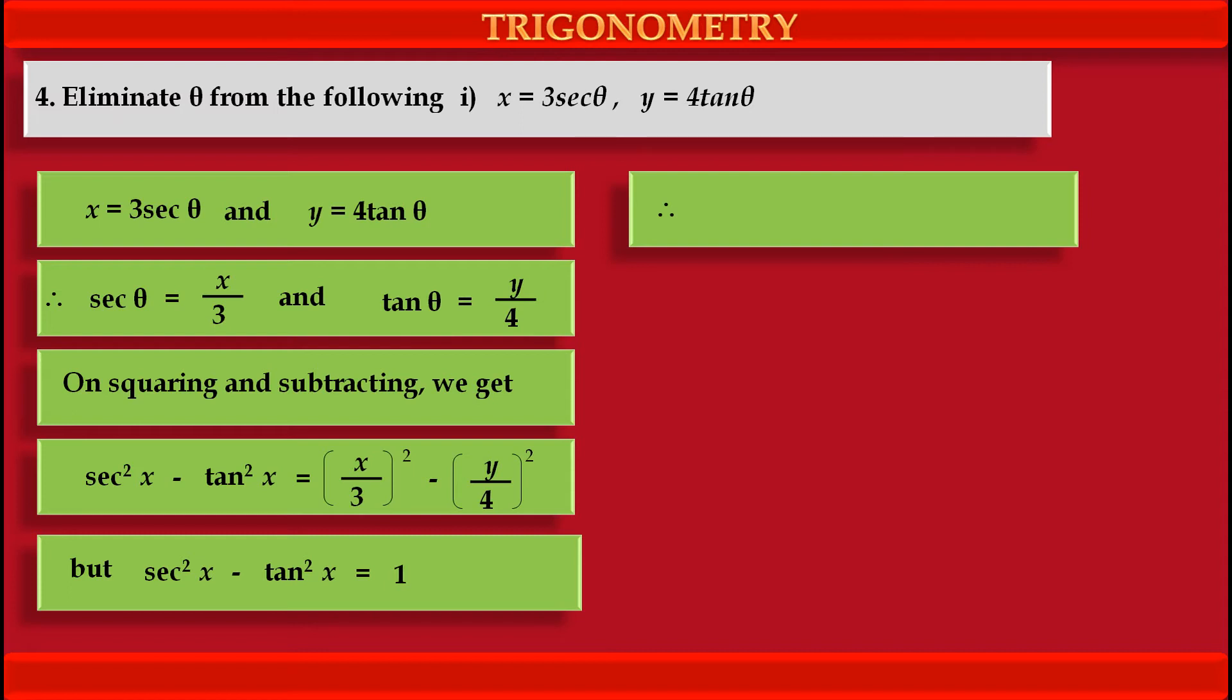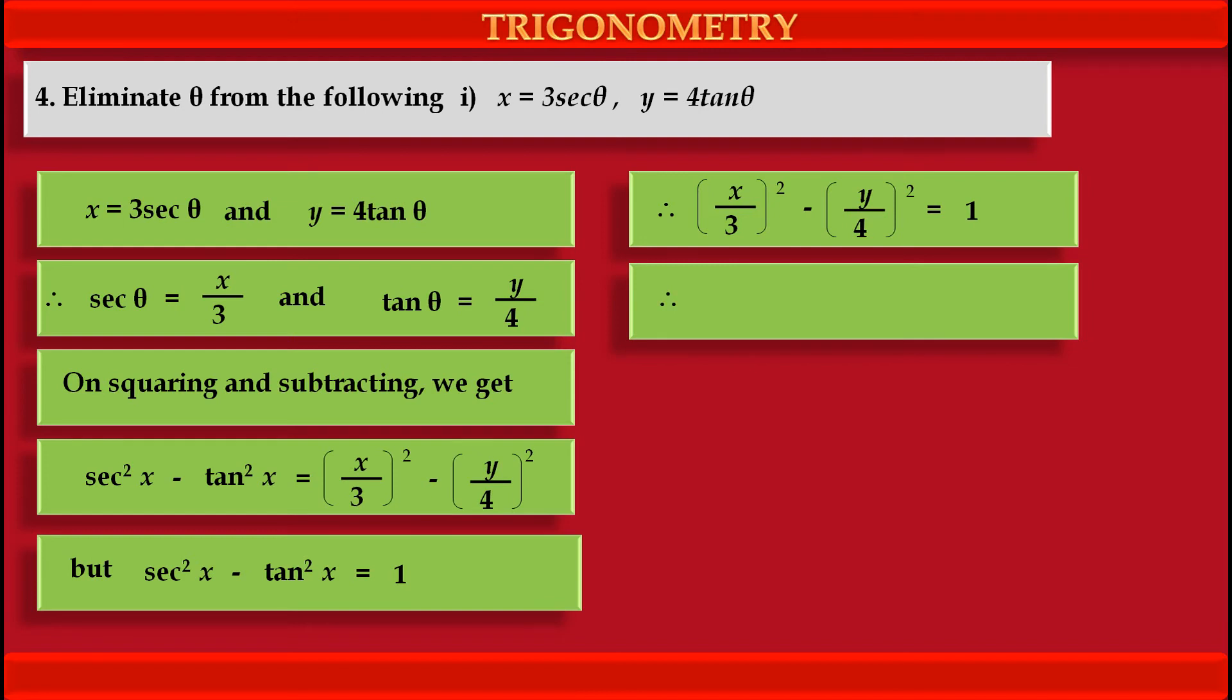We can write x upon 3 whole squared minus y upon 4 whole squared is equal to 1. Solving the above brackets means squaring them, we get x squared upon 9 minus y squared upon 16 is equal to 1.